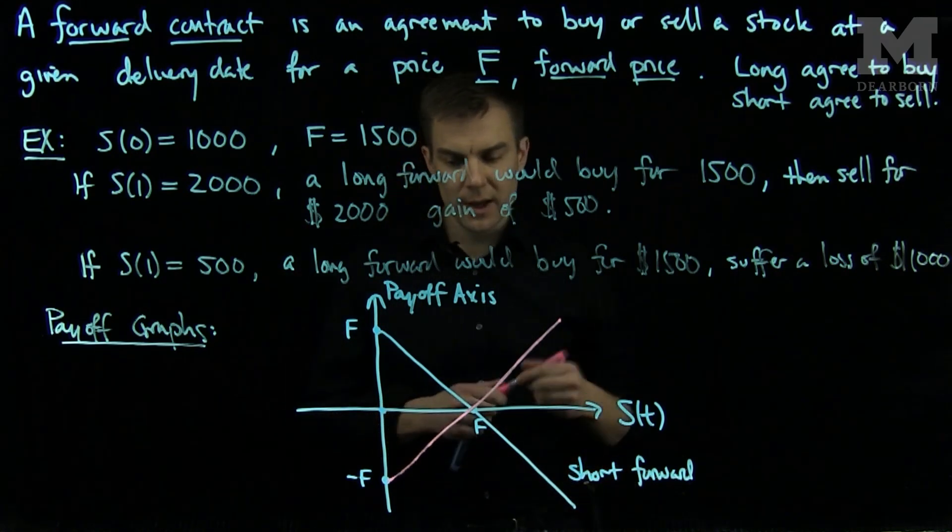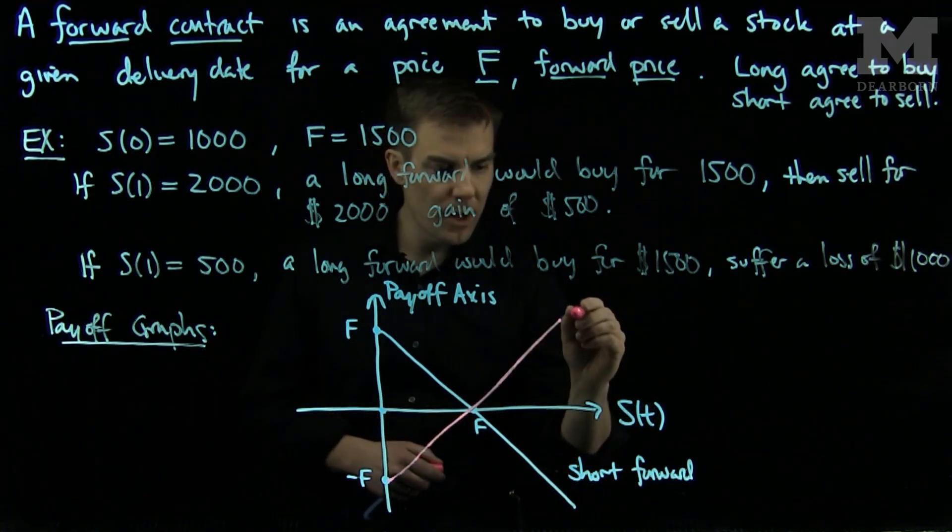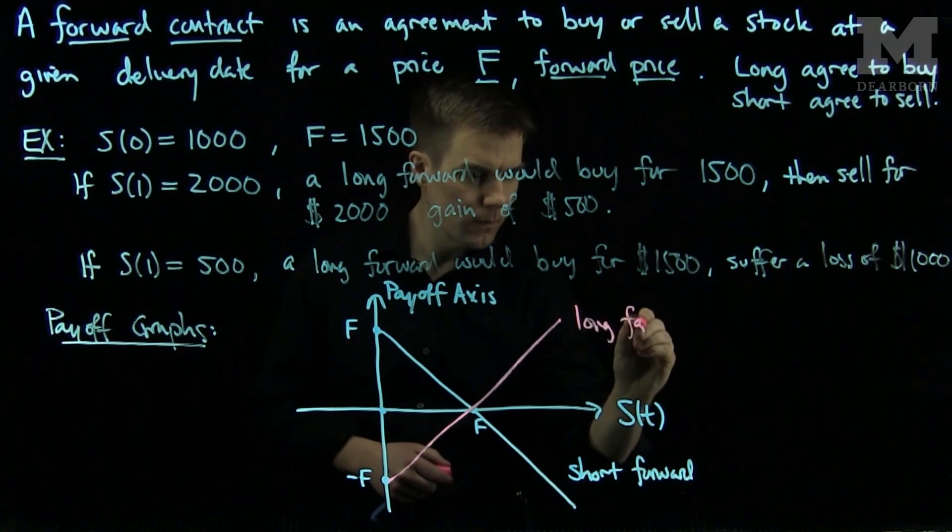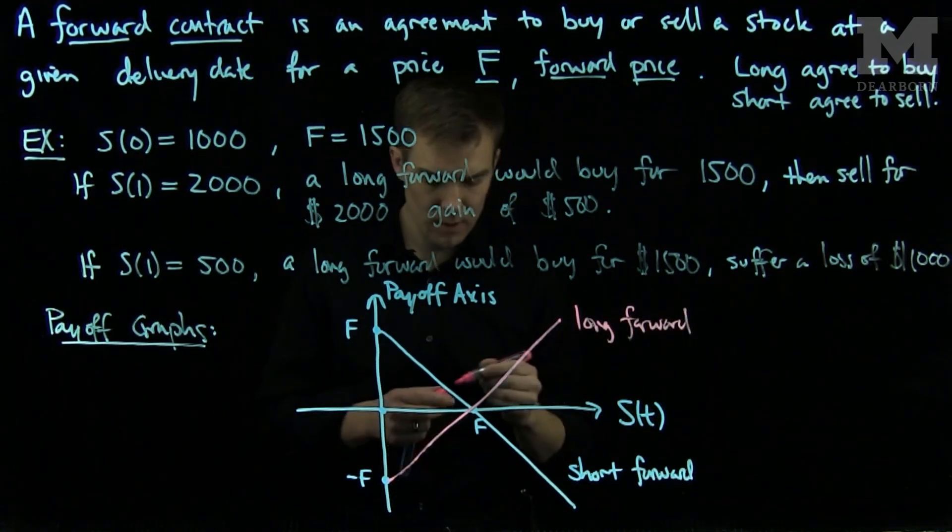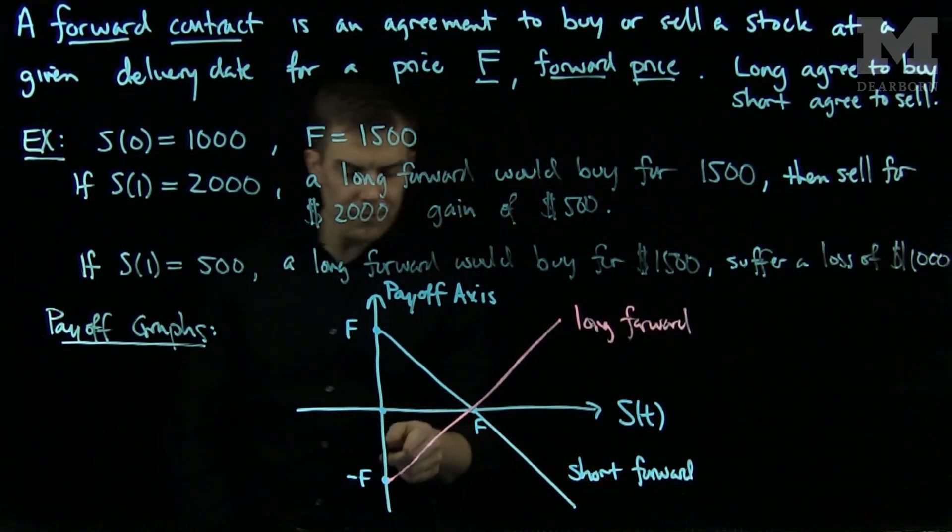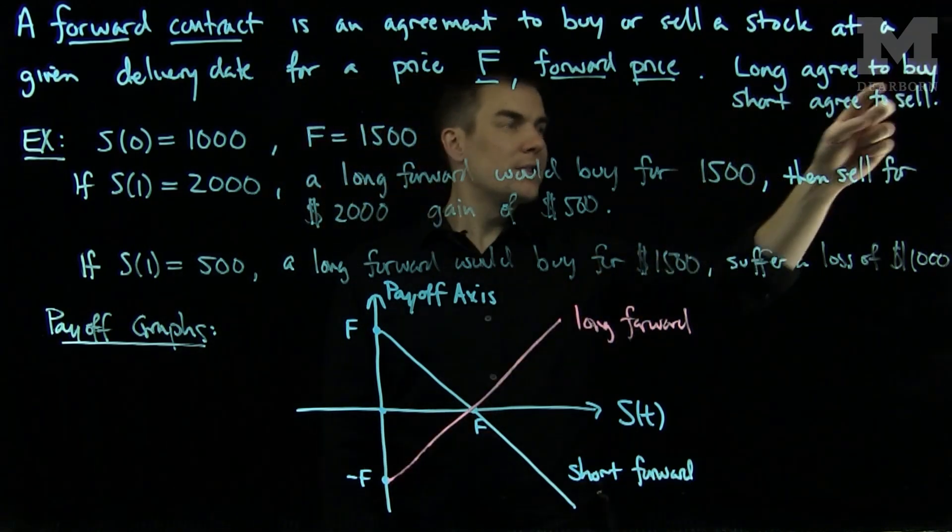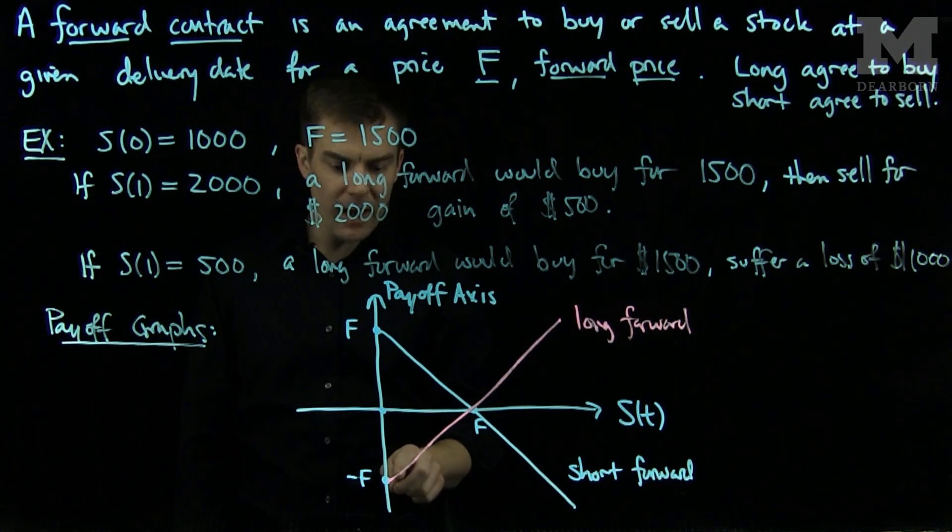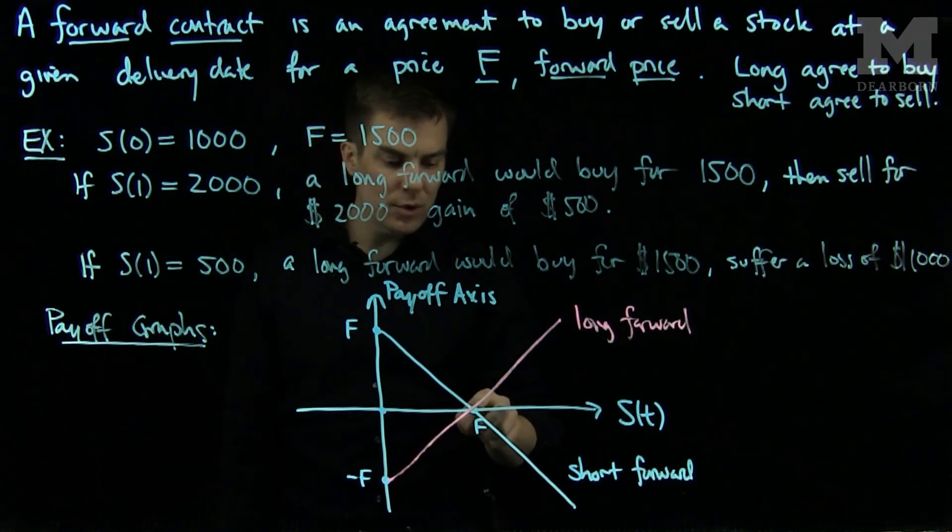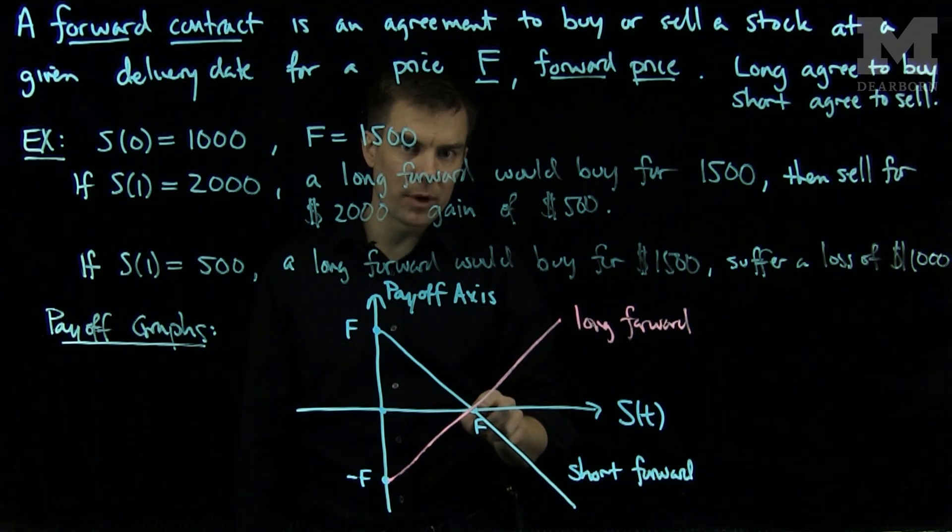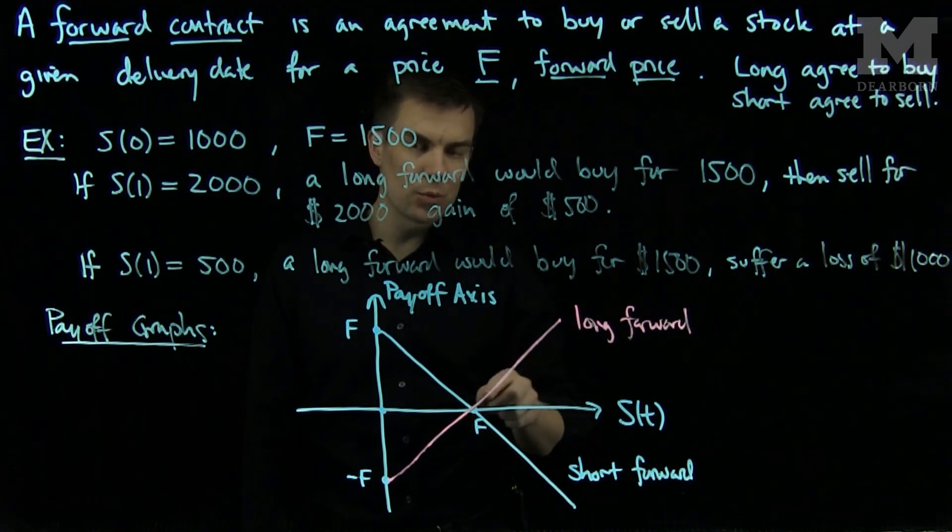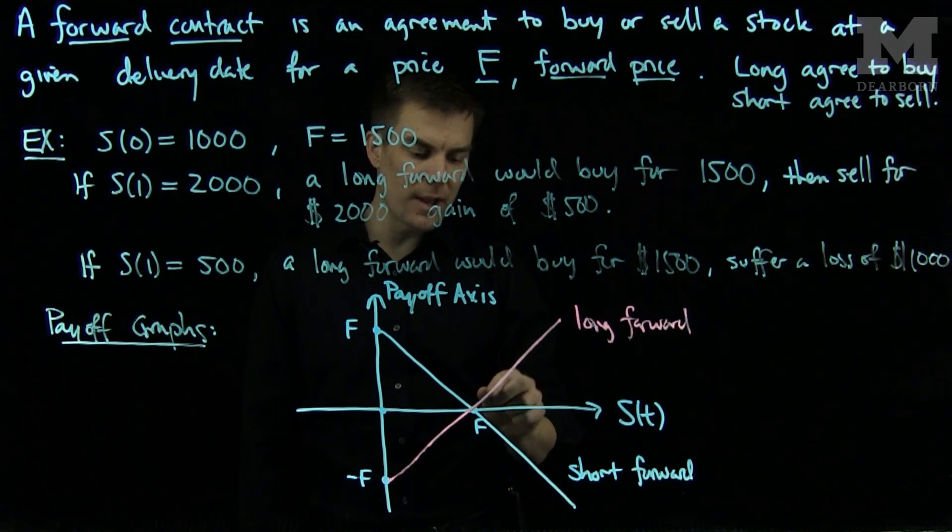Conversely, the pink is the representation of the payoff of a long forward. If the stock price is worth nothing, the long forward agrees to buy it at a price of F and they will suffer a loss of F dollars. But as soon as the stock price hits the forward price, the long forward position will start to earn a profit as long as you get a little bit larger than that.